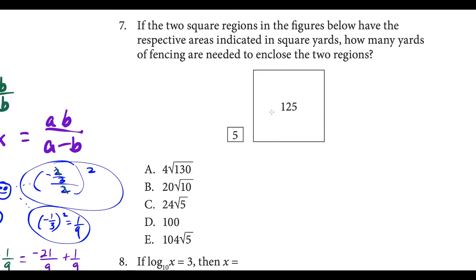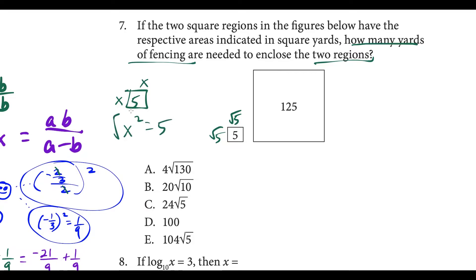Question seven: we have two squares with areas given in square yards, and we want to know how many yards of fencing are needed to enclose both regions — so we're looking for the combined perimeter. The side length of the first square is square root of 5, since x squared equals 5. Similarly, the side length of the bigger square is the square root of 125. You can check — multiplying these two radicals brings you back to the original area.